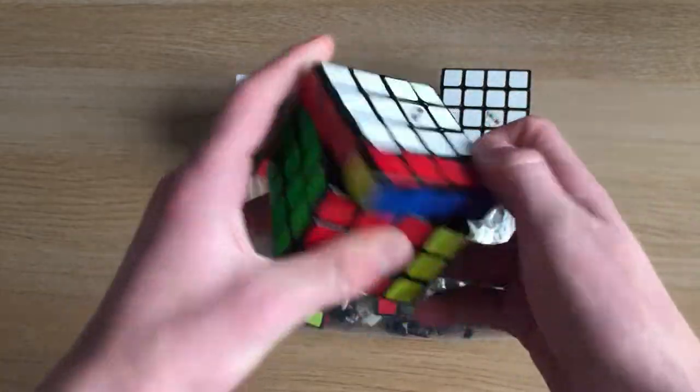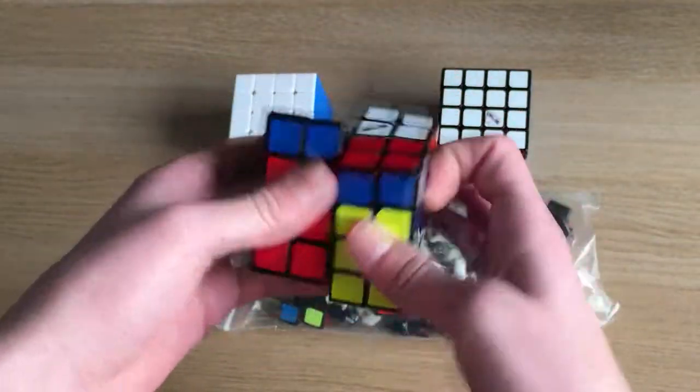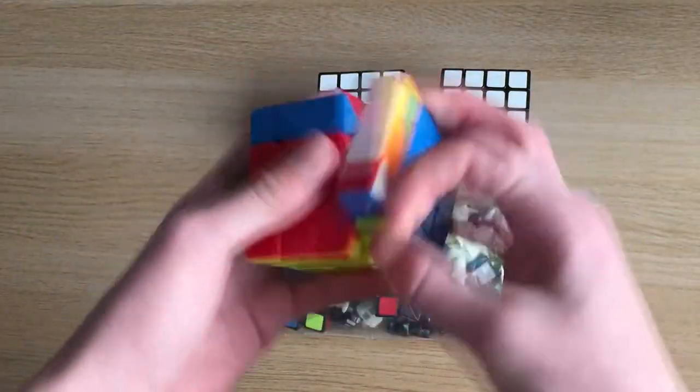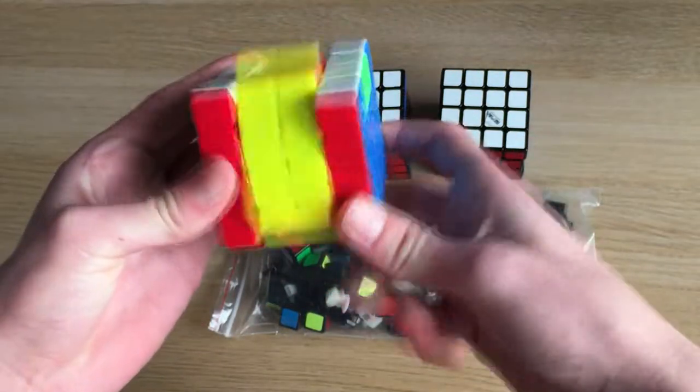Here we have a QiYi WuQue, which I used for my main for a while. Quite a nice cube, but again, it catches a little bit. Not as much as the Thunderclap Mini though. And here we have the YJ YuSu V2 M, my current 4x4 main. Really nice cube, nothing really wrong with it at all.